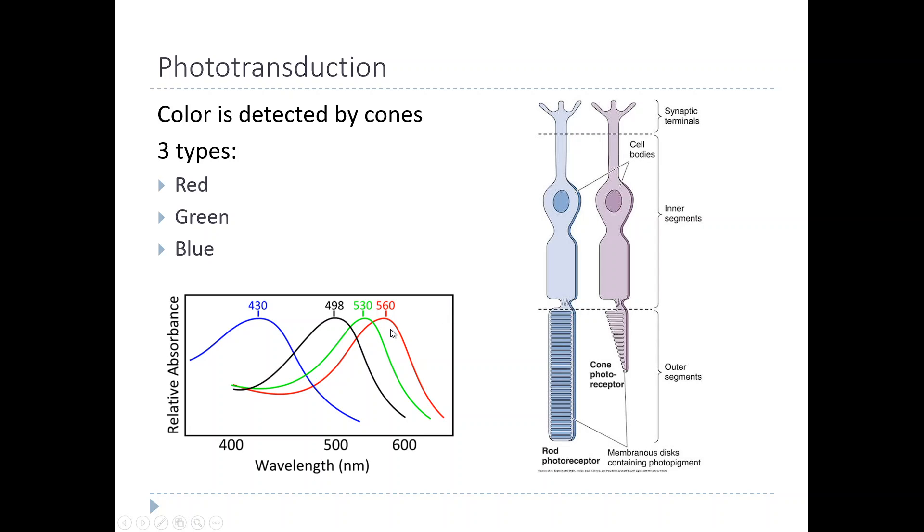Now, the fact that each of these cones has its own opsin protein means that if you are missing one of those opsin proteins, you will not be able to see that color. And in fact, this is what color blindness means. So if you are born with a mutation in one of the genes that encodes the protein for one of these colored opsins, you won't be able to see that color. It turns out that two of these opsins show up on the X chromosome - two of them are X-linked traits, which means that men tend to have them much more commonly than women because men only need one copy of the non-working version of the gene in order to have color blindness.